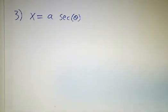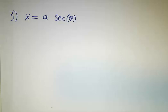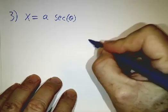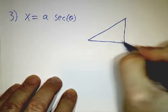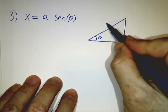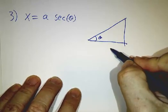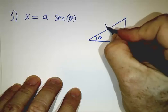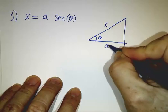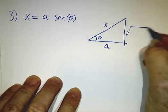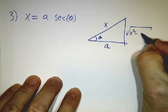The third kind of substitution is x equals a secant theta. Here we draw our triangle, so here's theta, and secant is hypotenuse over adjacent. So here this is x and this is a, and then this is going to be the square root of x squared minus a squared.